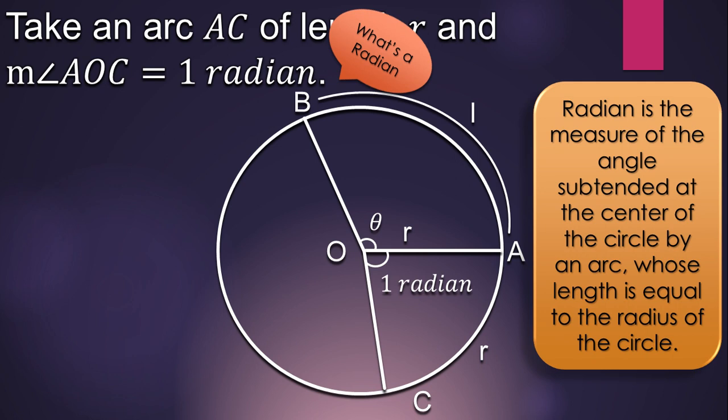I told you that the new arc AC has length equal to the radius of the circle. That's why it's 1 radian.